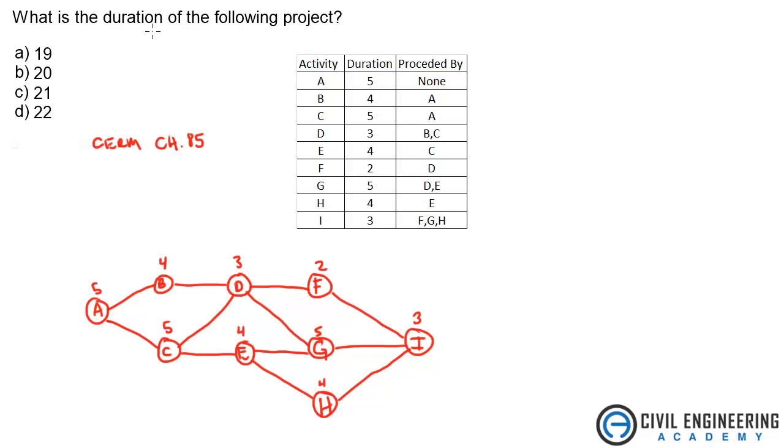Okay, so when it's asking for the duration of the project, they're asking for the critical path. Because that is the longest path that it takes, which is going to be the duration of the project. So it's just a tricky way of doing that. So let's look at all these different routes and see which one adds up to take the longest.